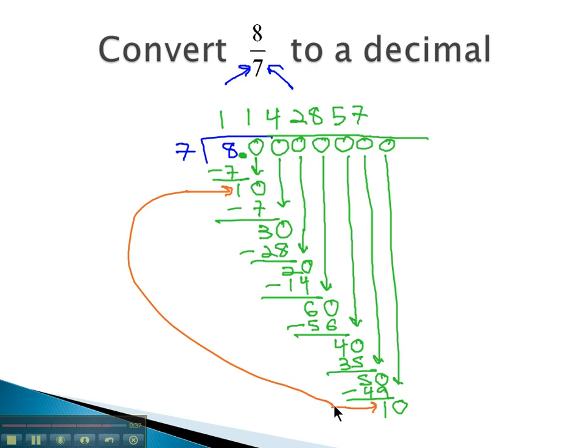Once we see that repeating loop, we'll back up to the first 10. It went in there once, and we're going to put a bar over that repetition. That bar says the 142857 is going to repeat over and over again.